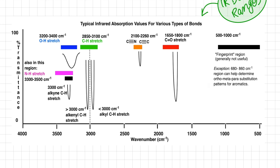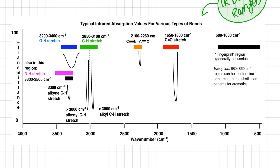Different functional groups show characteristic peak ranges. For example, OH stretching ranges from 3400 to 3200 per centimeter, CH bond stretching from 3100 to 2850 per centimeter, C≡C from 2260 to 2100 per centimeter, and the CO carbonyl or carbon monoxide stretching, which we are interested in, mainly lies from 1800 to 1650 per centimeter.